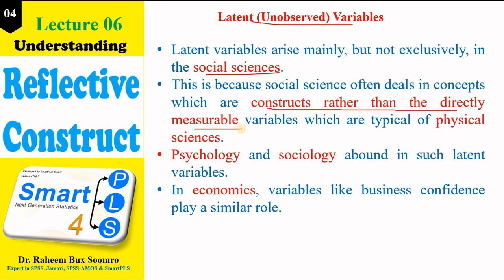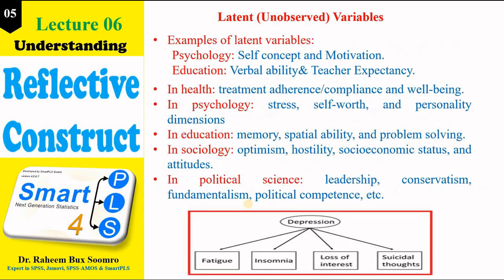Latent variables can be used in psychology, sociology, and even economics. Some examples of latent variables in psychology, education, and political science include: memory, problem solving, optimism, self-worth, conservatism, leadership, and fundamentalism. Looking at one image here, the latent variable 'depression' is shown — we cannot directly measure depression, so we get help from indicators like fatigue, insomnia, loss of interest, and suicidal thoughts.